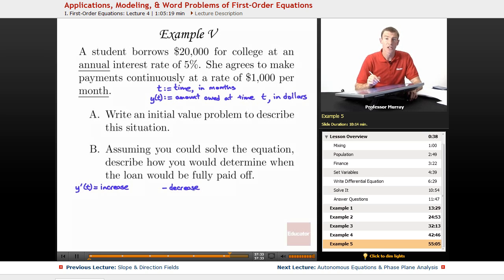The increase, what's making the amount that she owes increase? Well, that's the interest. As she keeps the money, interest builds up and she has to pay back more later. So the increase is determined by the interest. And the decrease is determined by the rate at which she pays it back. So the decrease is given by the payments that she makes.